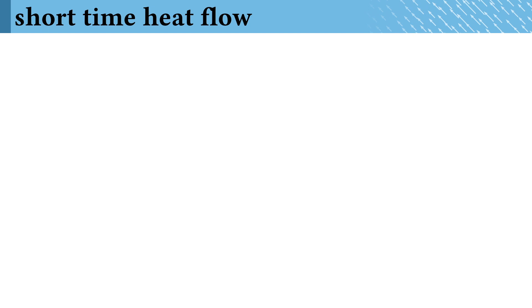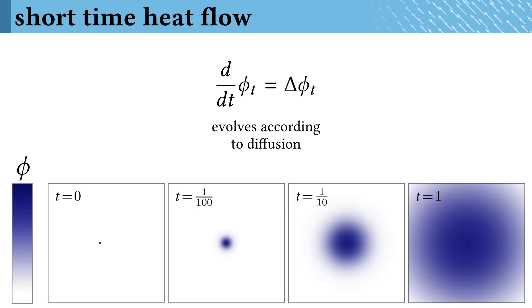So to warm up, let's talk about scalar heat flow. Here, a distribution φ gets diffused over time, evolving according to the action of its Laplacian. As we see on the bottom, an initial point gets blurrier and blurrier as time proceeds.